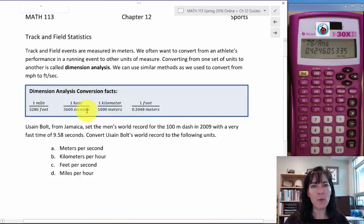we can use them the way they are written, or we can flip them over. So you could have one mile in the numerator, 5280 feet in the denominator, or like we saw for tennis, we did it 5280 feet over one mile. Same for this, you could have 3600 seconds in the numerator and one hour in the denominator. This fraction, you could have 1000 meters in the numerator and one kilometer in the denominator.